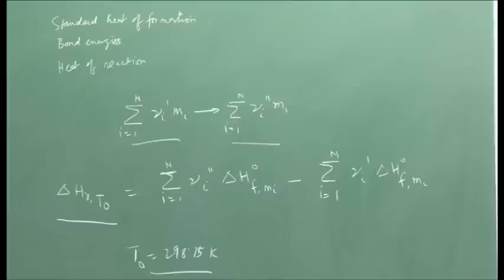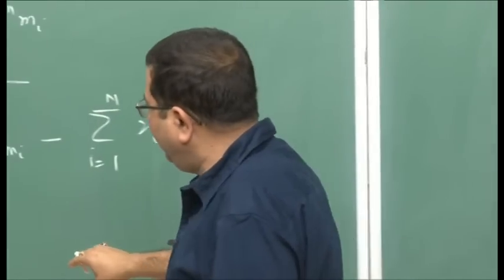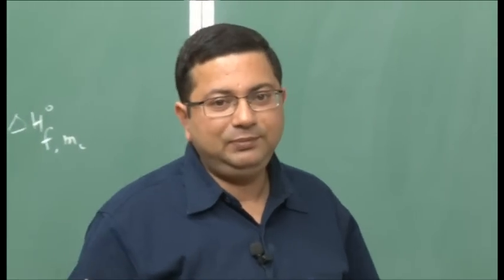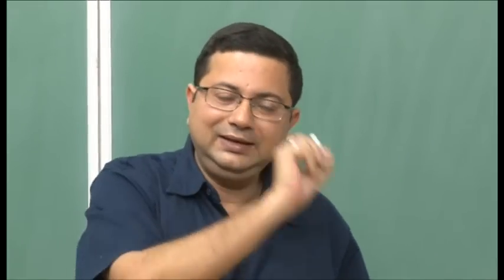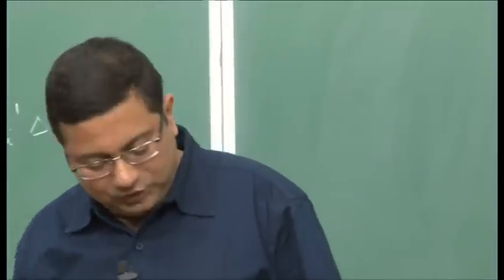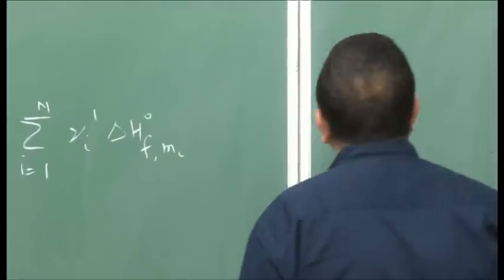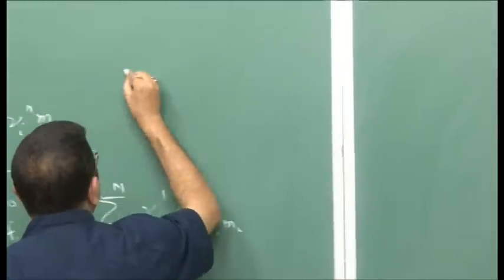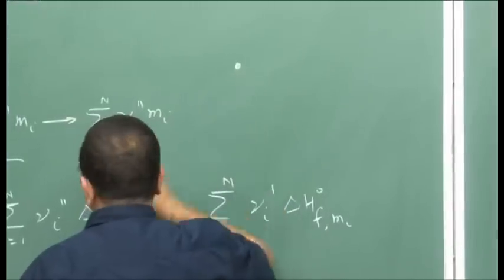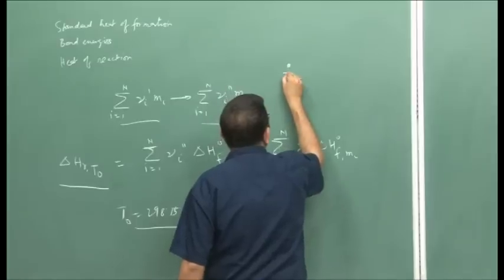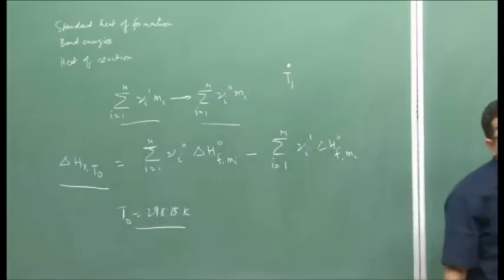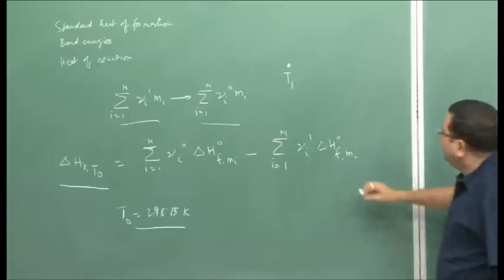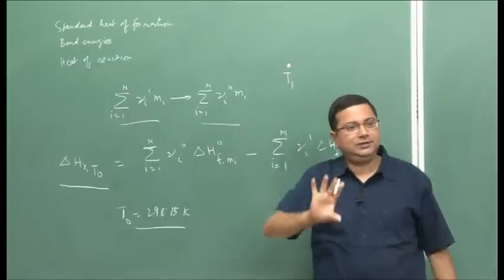Looking at the thermochemical laws, whether the reaction takes place in one step or multiple steps, as long as the initial and final states are the same, we are going to have the same change in enthalpy. Based on that, we devised a schematic. Let us say the reactants are at state T1 and we know the heat of reaction at T1, and we have to find out the heat of reaction if the reactants were at state T2.